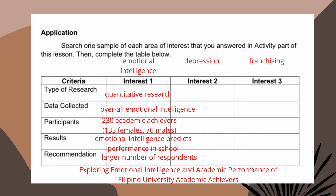In my case, my first interest is emotional intelligence, second is depression, and third is franchising. I searched for a study about emotional intelligence and found 'Exploring Emotional Intelligence and Academic Performance of Filipino University Academic Achievers' by Lucila Banz and John Ray Acopio. This is a quantitative type of research. It used a survey questionnaire scored using a Likert scale, and the data was analyzed using Pearson's correlation.